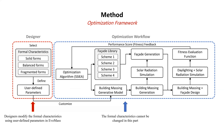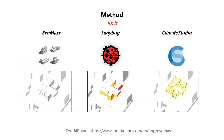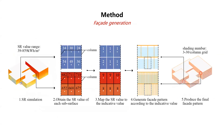In this paper, we use three different types of formal characteristics: a solid form, a balanced form, and a fragmented form. For the tools, we use EWMS to generate the building massing, run simulation of surface solar radiation, and use Climate Studio to simulate daylight accessibility. For the facade generation, we extract the solar radiation value of each region on the surface of the building and turn this value into an indicator to control the facade design pattern — typically the size and density of the shading panel or the window-to-wall ratio. After that, the facade is attached to the building massing surface.